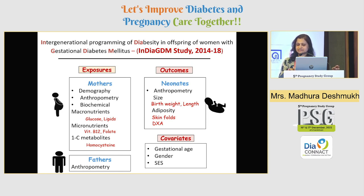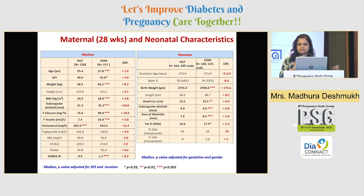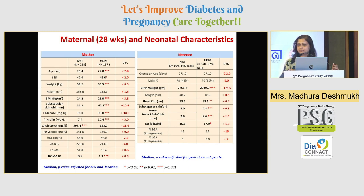In the neonates, birth size is measured by anthropometry and adiposity is measured by skin folds and DEXA. The results of DEXA measurements are not discussed in this presentation. For the analysis, covariates included gestational age, gender, and socioeconomic status. After following standardized inclusion and exclusion criteria and considering dropouts, we report on a total of 385 pregnancies which included 157 GDMs and 228 NGT pregnancies.